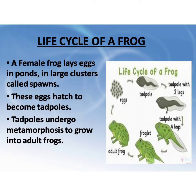Life cycle of a frog: A female frog lays eggs in ponds in large clusters called spawns. These eggs hatch to become tadpoles. Tadpoles look like fish and breathe through gills. They have a tail and they swim in water. These tadpoles undergo metamorphosis to grow into adult frogs. In the picture, the tadpole gets converted to a tadpole with two legs, then from two legs to four legs, then the tail disappears and it becomes an adult frog.